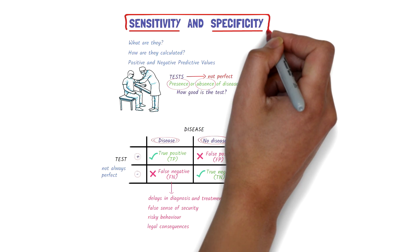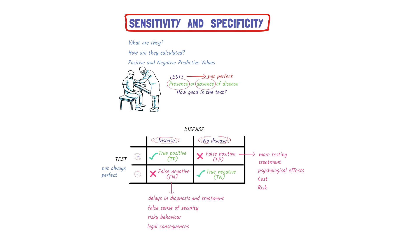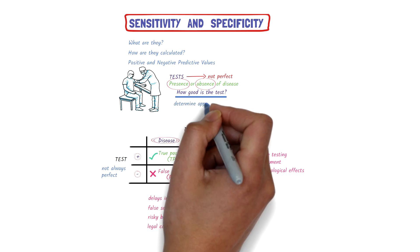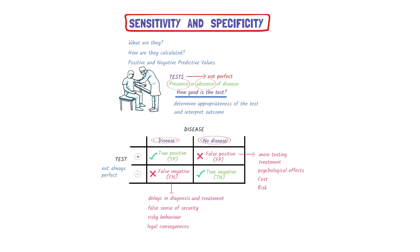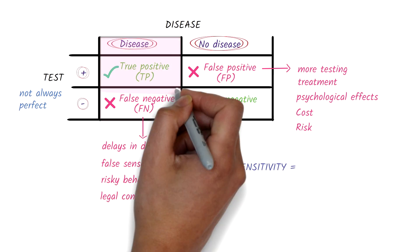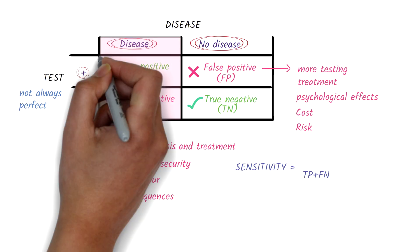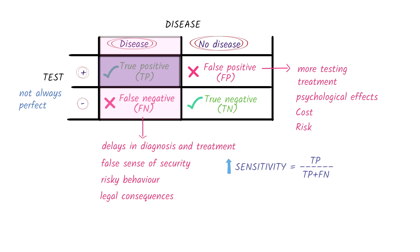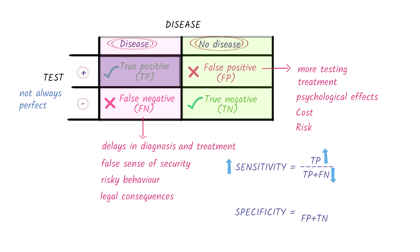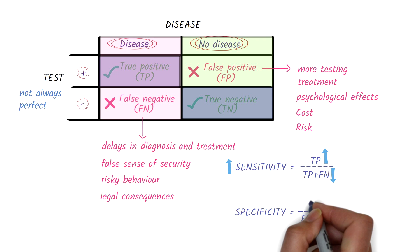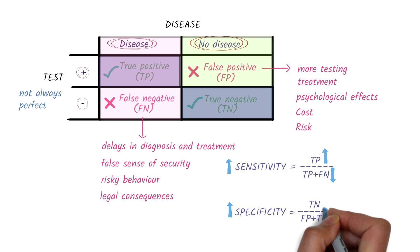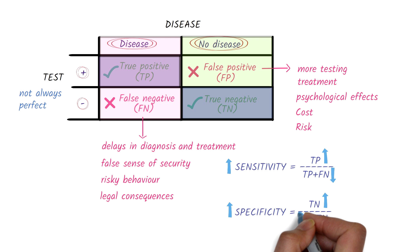Using these terms, we can calculate the sensitivity and specificity of the test. These are indicators of how good a test is and guide us on how to determine the appropriateness of a test and interpret its outcome. Sensitivity is the proportion of people with the disease who test positive for it. A high sensitivity means that the proportion of true positives is high and the proportion of false negatives is low. Specificity, on the other hand, is the proportion of people without the disease who test negative for it. A high specificity means that the proportion of true negatives is high and the proportion of false positives is low.